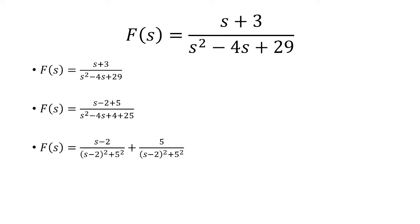We know that s squared minus 4s plus 4 can be rewritten as s minus 2 quantity squared, and 25 is just 5 squared.